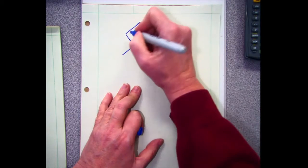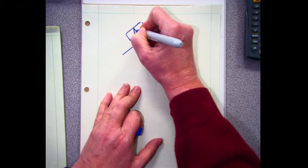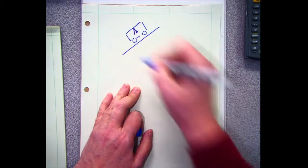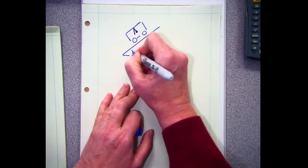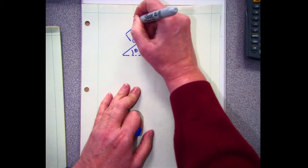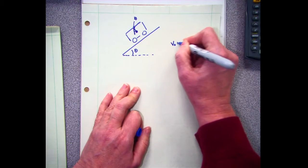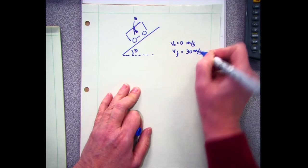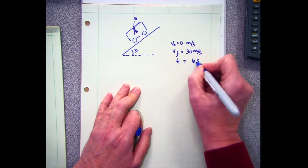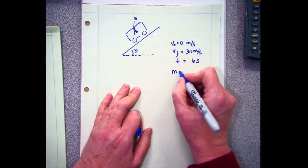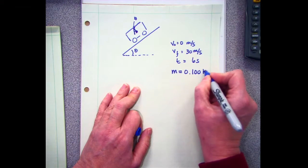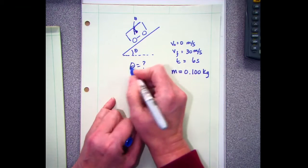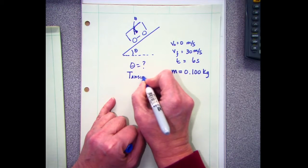On this cargo van, somebody's experimenting. They are going down the hill, and I've got a toy hung from the ceiling of the cargo van. This angle and this angle are the same. The initial velocity was 30 meters per second, the final velocity is 30 meters per second, the time is six seconds, and the mass of the bob on the pendulum is 1.00 kilogram. We want to know the angle and the tension in the string.